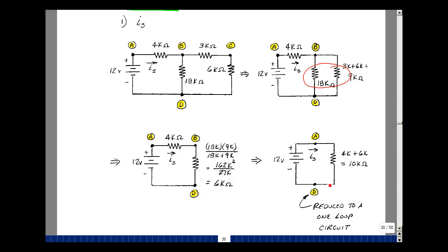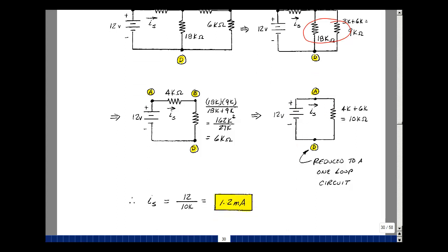Now the voltage across the resistance is 12 volts. Divide by 10k, and we get 1.2 milliamps.